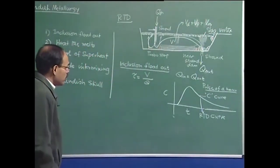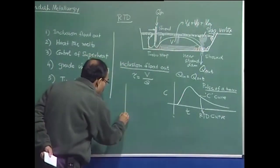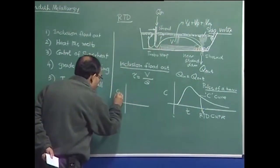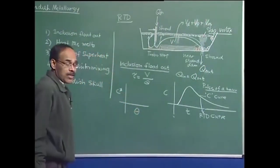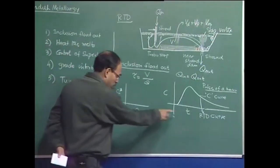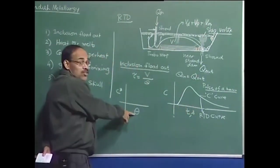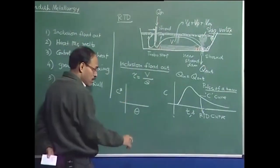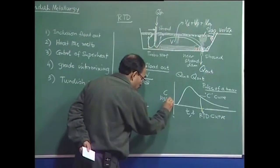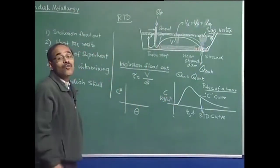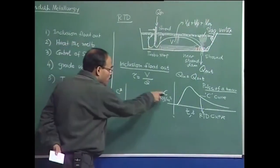The concentration can be converted to a non-dimensional concentration C-star versus non-dimensional time θ. The dimensional time t is in seconds, while θ has no unit. Concentration C is in kg per meter cube, and C-star is dimensionless. C-star is obtained by dividing the instantaneous concentration by the bulk concentration. The bulk concentration means: if V is the volume of the Tundish and we have added a mass of tracer, the bulk concentration is mass of addition divided by volume V, also in kg per meter cube.